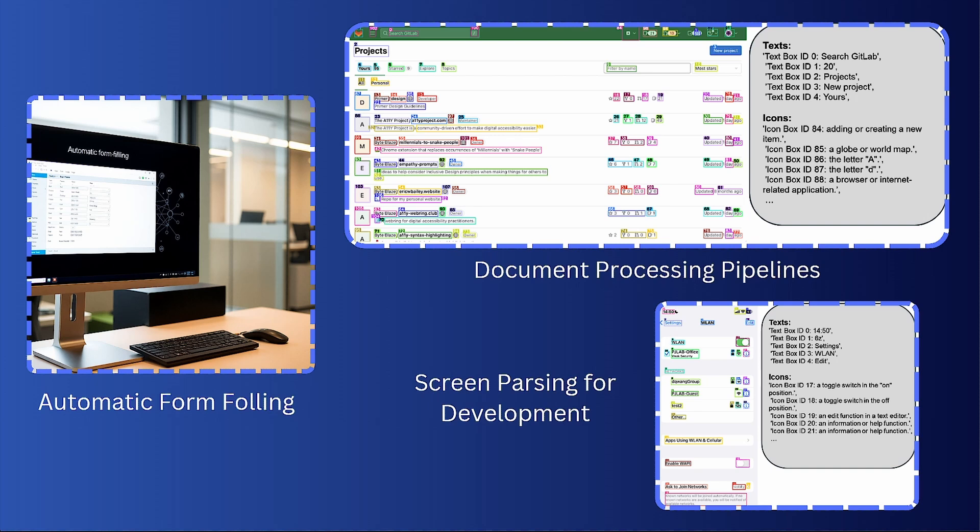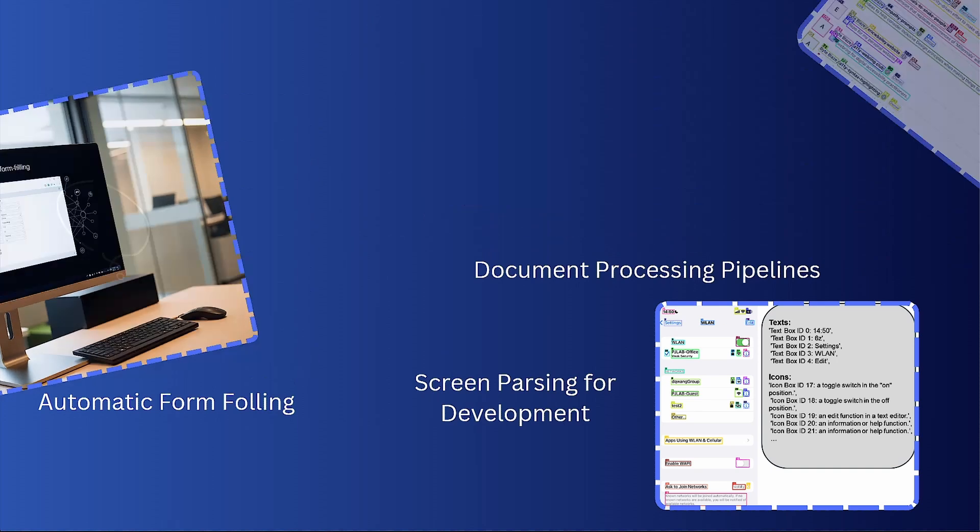So where can you use OmniParser and computer use for AI agents? OmniParser opens up several potential applications, especially when integrated with the computer use feature we saw in Claude. Consider scenarios where an agent must pull specific data from forms, invoices, or emails, and then populate another document or system — OmniParser's ability to handle complex layouts makes it ideal for this. Screen parsing is also essential in virtual assistants or customer support automation; with computer use, AI agents can parse and interact with on-screen information, interpret it, and execute actions without manual oversight. And finally, for industries with heavy documentation like legal, healthcare, or finance, OmniParser can streamline workflows by parsing large volumes of structured and unstructured data, providing more precise and faster extraction.